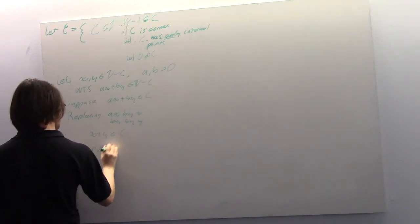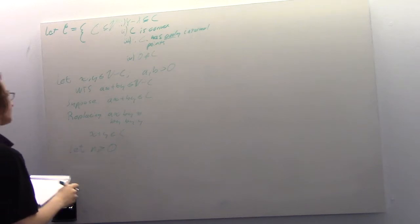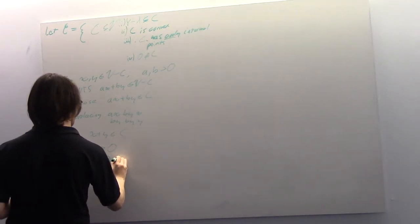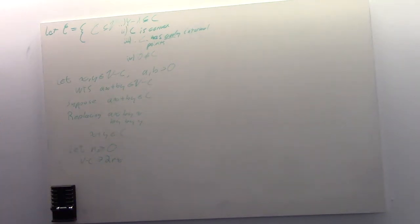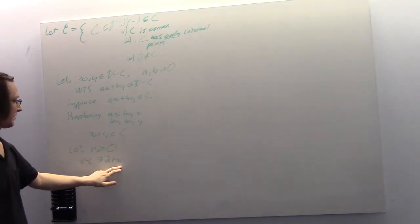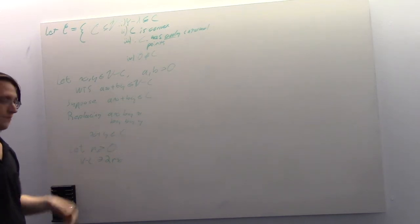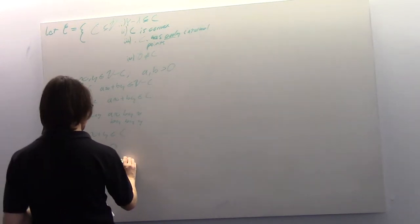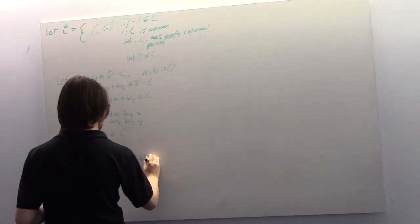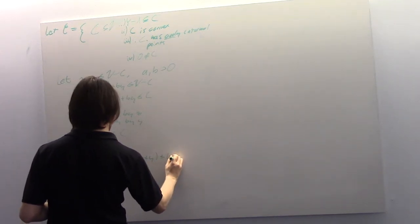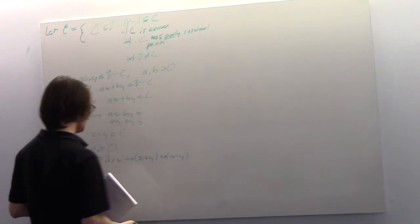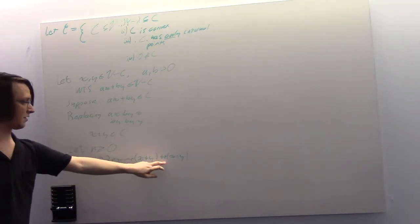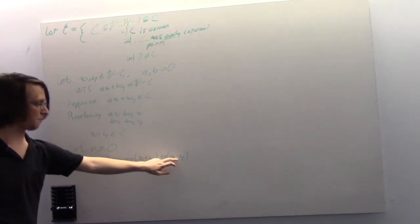Let r be greater than or equal to zero. Then 2rx is an element of V minus C. We know this because x is an element of V minus C and 2r is positive. We can write this as x plus y plus x plus x, which equals rx plus y plus rx minus y, or rx, rx, ry, minus ry.